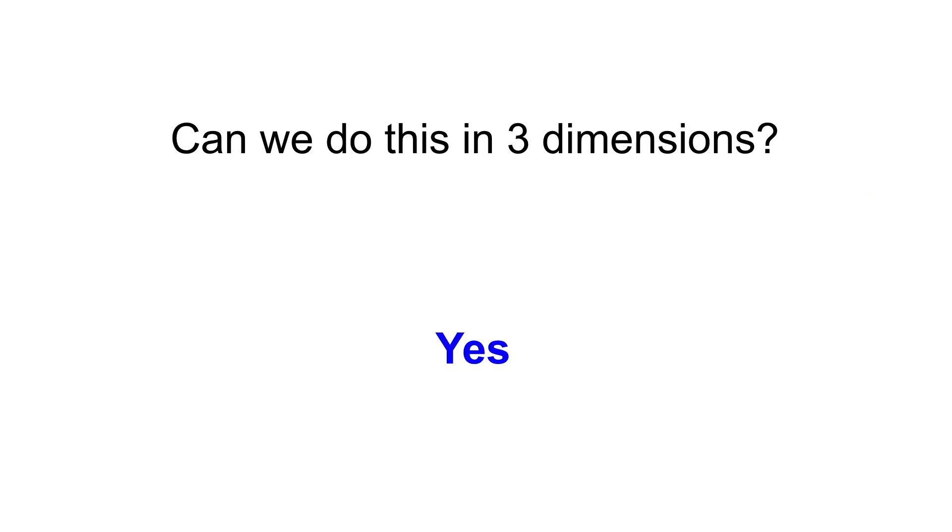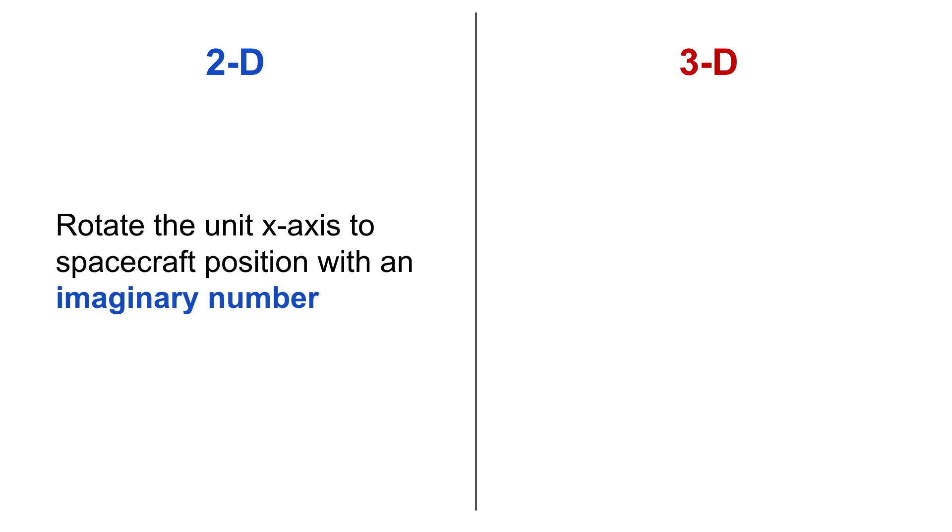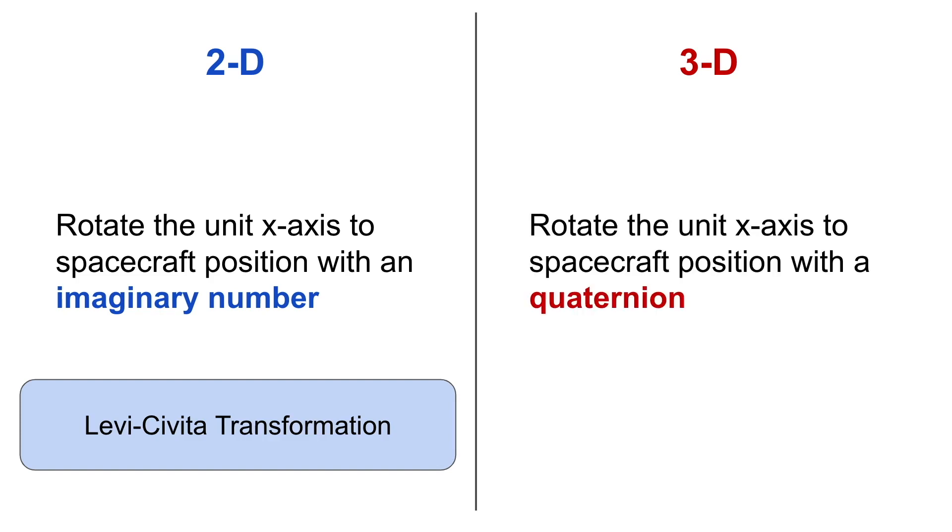The question becomes, can this same process be applied to the full three-dimensional spacecraft state? The answer is yes. But in order to describe it, we must first take a look at the parallels between the 2D and 3D cases. In two dimensions, we express the spacecraft position by a scaled rotation of the unit x-axis to the spacecraft's position vector using an imaginary number. This was described as the Levi-Sevita transformation. For three dimensions, we will once again describe the position of the spacecraft as a scaled rotation from the unit x-axis, but this time we will do so with a quaternion. This resulting transformation is known as the Kustenheimer-Steifel or KS transformation.